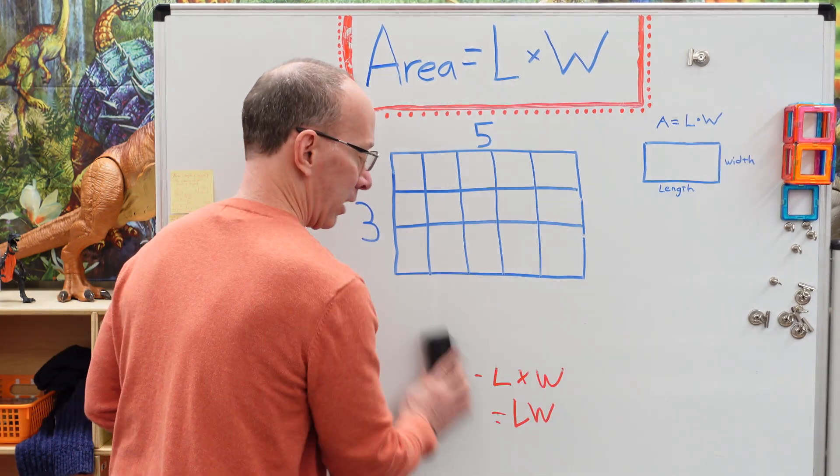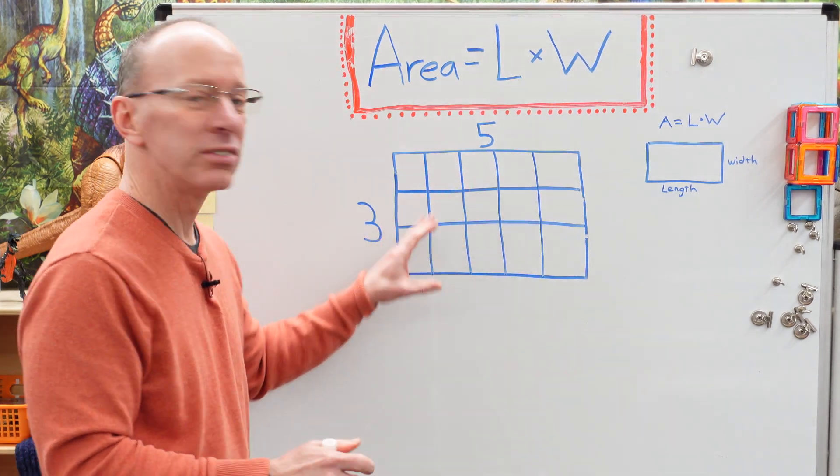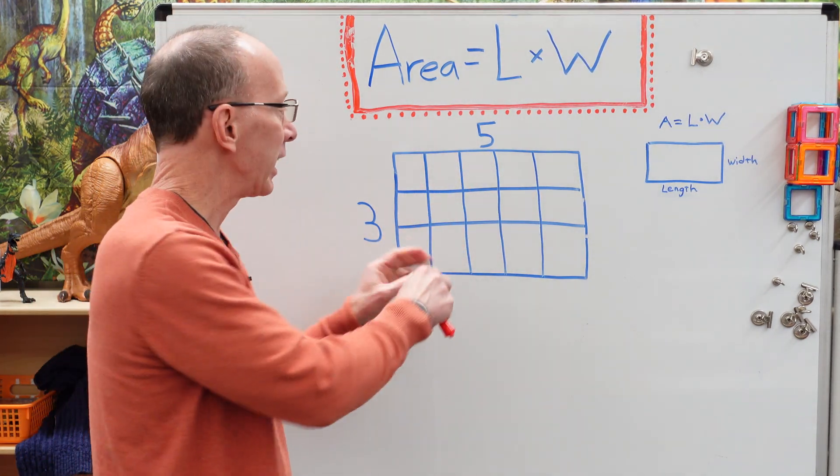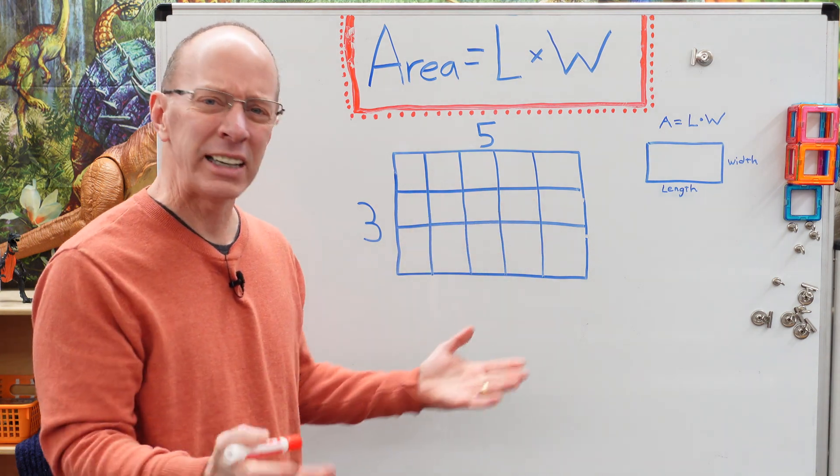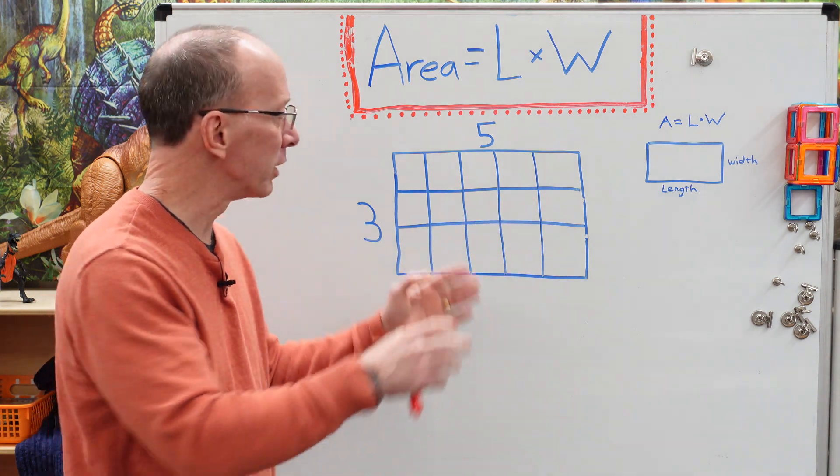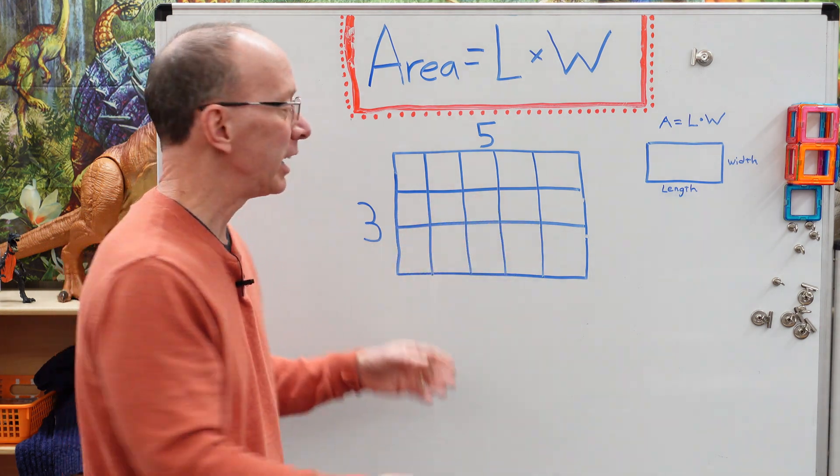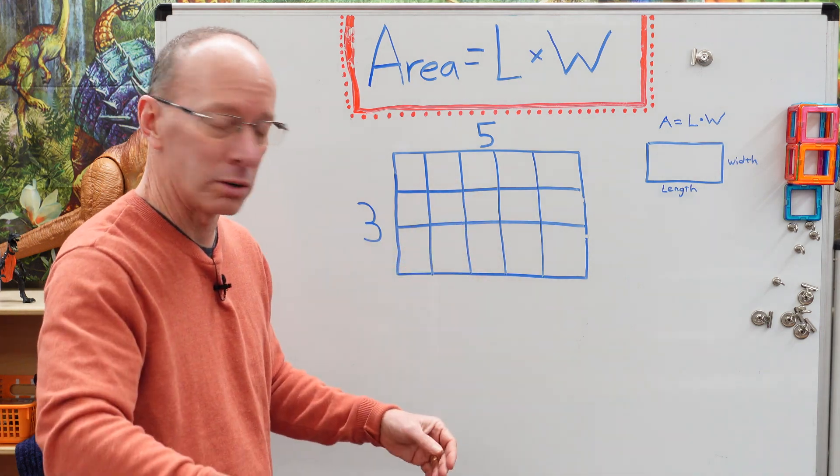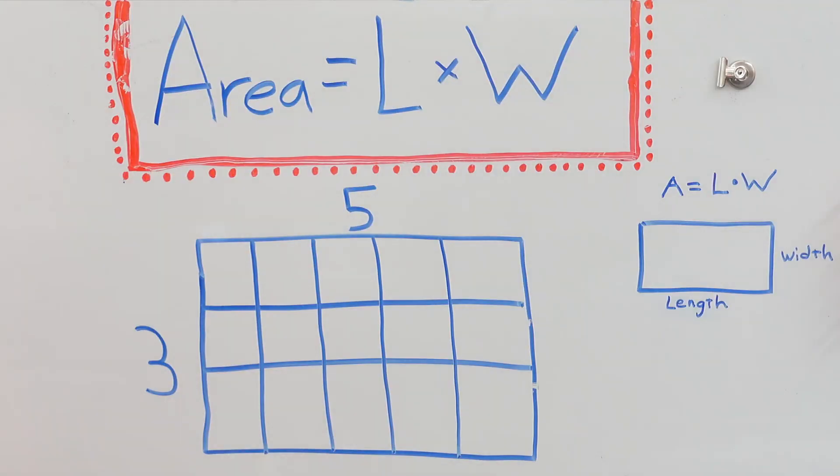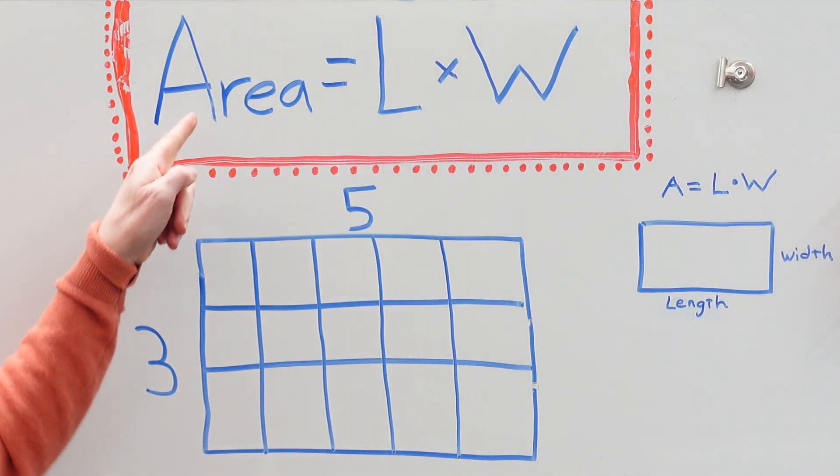Well, we have a rectangle, and we need to find the square units in the area of this rectangle. Now, you might say, well, why do we need to do that? Well, maybe you are going to carpet a room and you need to figure out how much carpet you need to order to put on the floor of your room. So this is a good example.